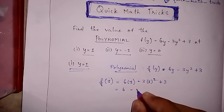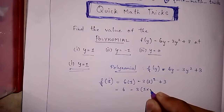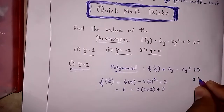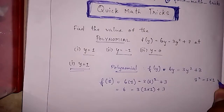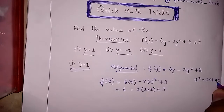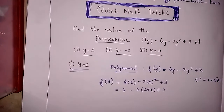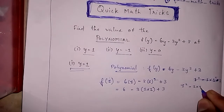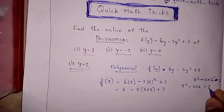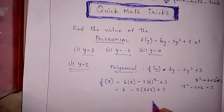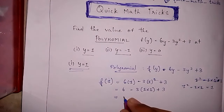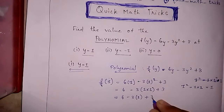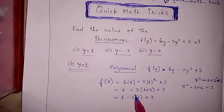So the next step: 6 times 1 minus 3 times 1 into 1 plus 3. Because 1 squared is equal to 1 into 1, which equals 1. So the value is 1, and we apply the third step: 6 minus 3 times 1 plus 3.